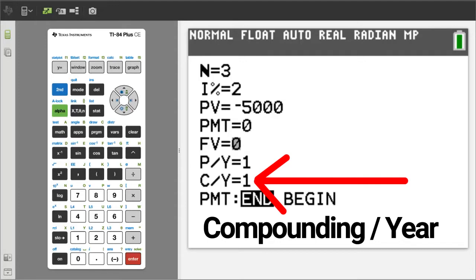If the interest is going to be compounded monthly, then we would set C/Y to 12.